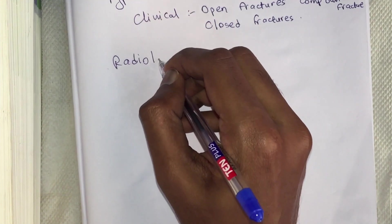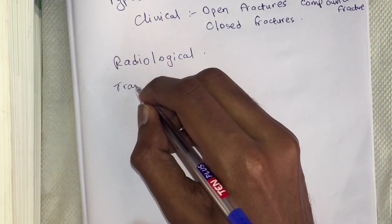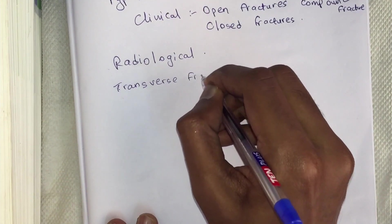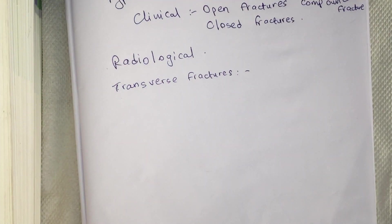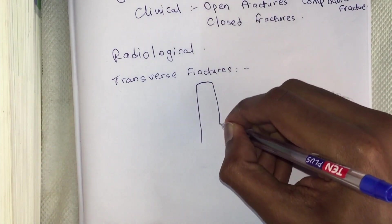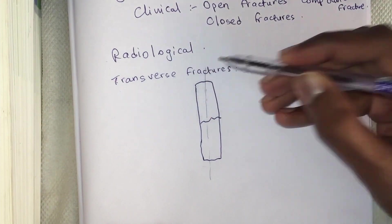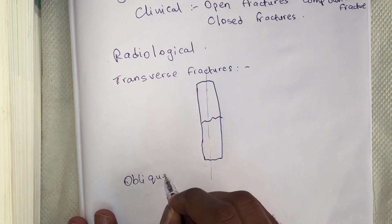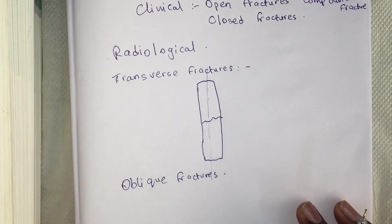Radiological classification is based on the mechanism of injury. The first type is transverse fractures. In a transverse fracture, the fracture line is perpendicular to the long axis of the bone. This occurs due to a tapping or bending force. Oblique fractures occur when a bending force plus a component along the long axis of the bone breaks the bone.